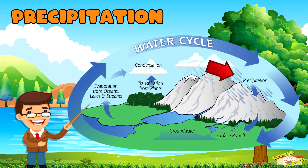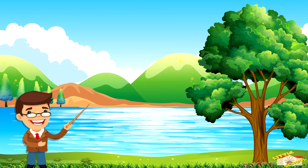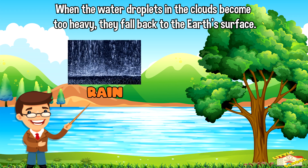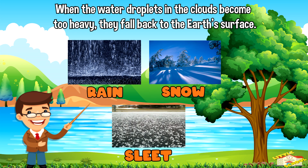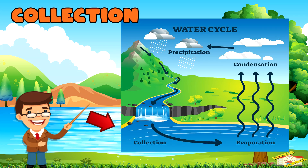Precipitation. The next step in the water cycle is precipitation. When the water droplets in a cloud become too heavy, they fall back to the Earth's surface in the form of rain, snow, sleet, or hail.